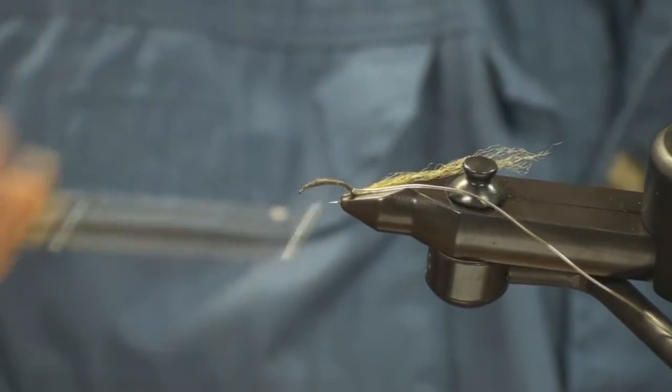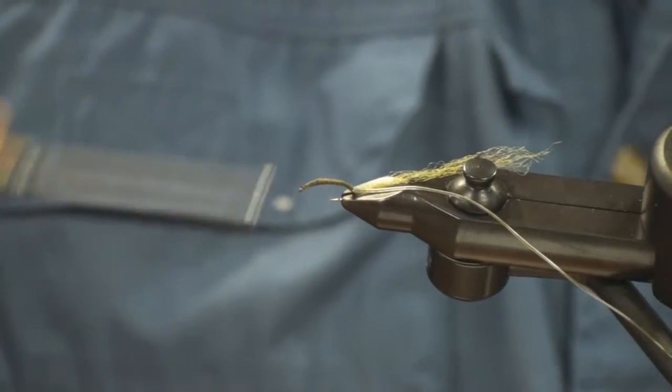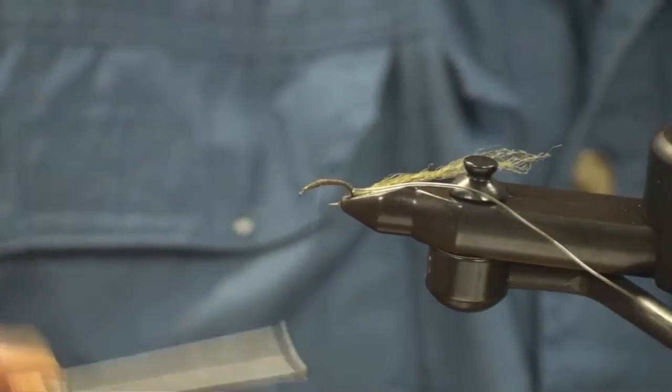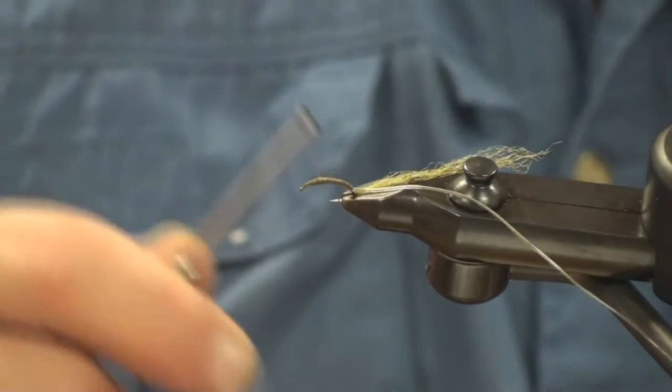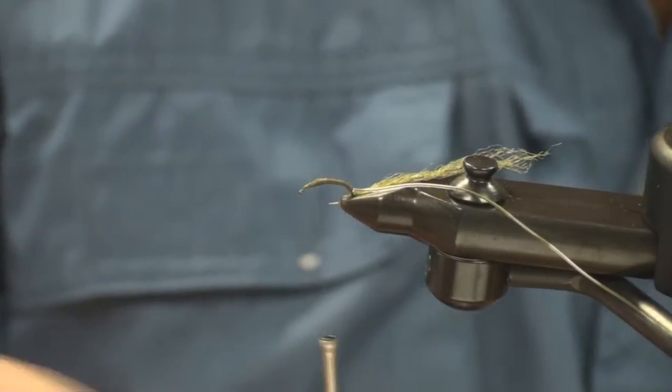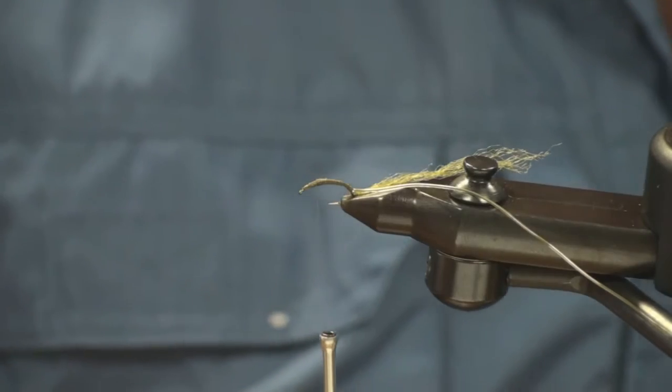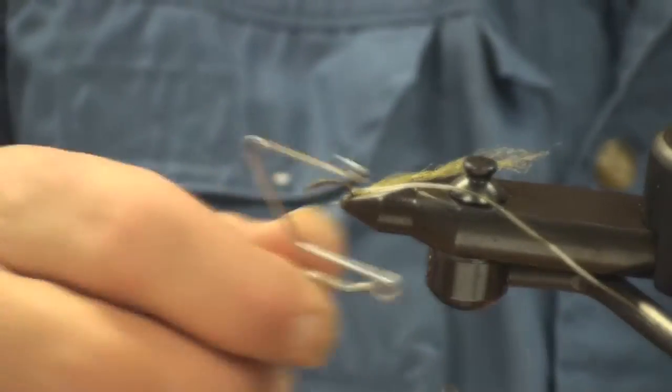The color you're using in the thread is olive? This is olive, yes. This is going to be olive over olive. This is 8-0 uni thread or I use Benecchi. I like to use it in smaller diameter. Now I'll whip finish the thread off here.